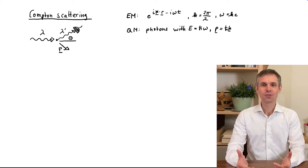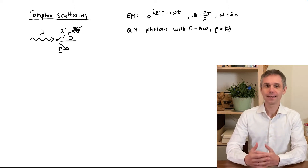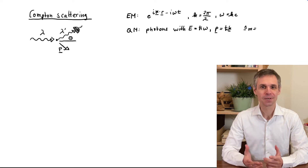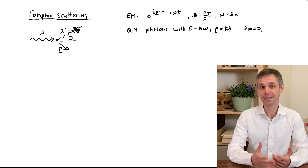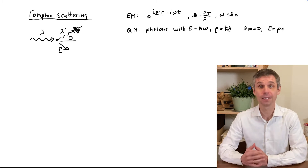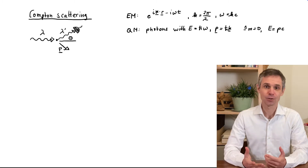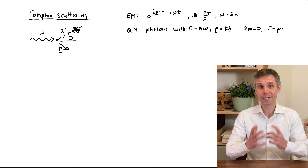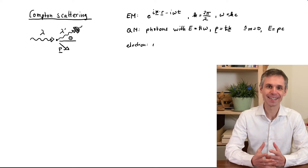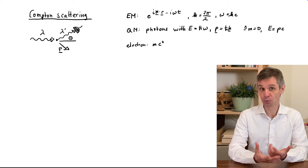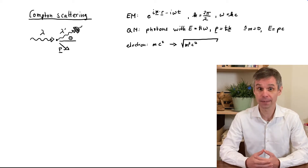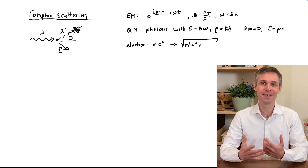As these photons move with the speed of light, they do not carry any mass, which is also confirmed by the resulting linear relativistic relation between energy and momentum. This is in contrast to massive particles such as the electron, which already have a finite energy when they are at rest and whose energy changes non-linearly with momentum when they move.